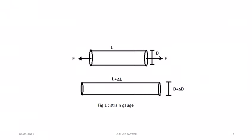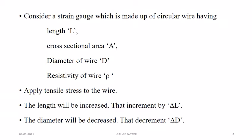If we apply a tensile stress to the wire, what will happen to the circular wire? The length will be incremented by a small factor denoted as delta L. Then as the length increases, the cross-sectional area will be reduced — that means the diameter decreases, and the decrement in the diameter will be denoted as delta D. So the original length is capital L, original cross-sectional area is capital A, diameter is capital D, and resistivity of the wire is rho. After applying tensile stress, the length increments by delta L and the diameter decrements by delta D.